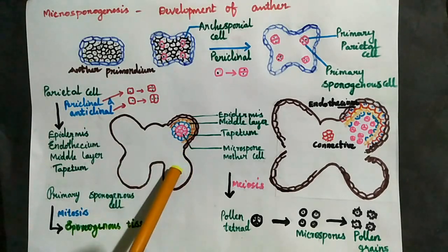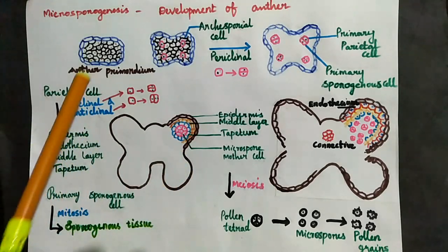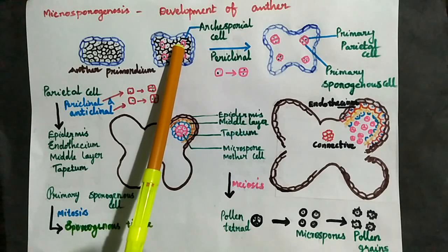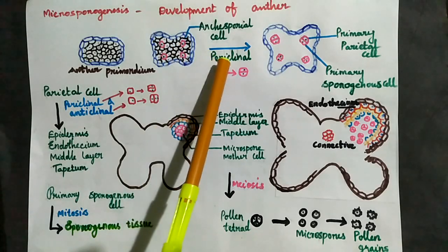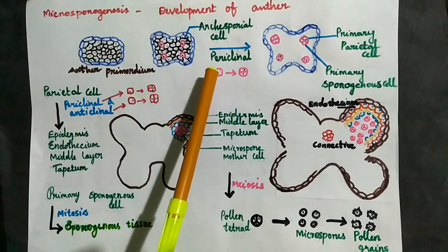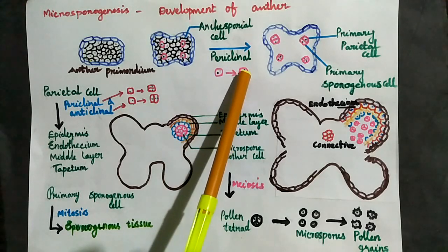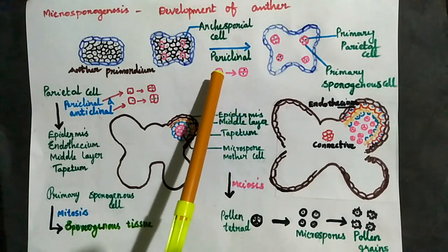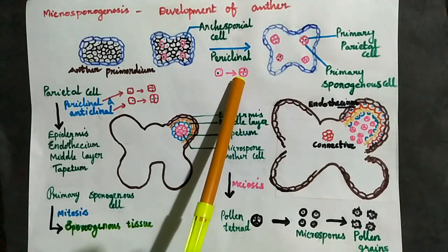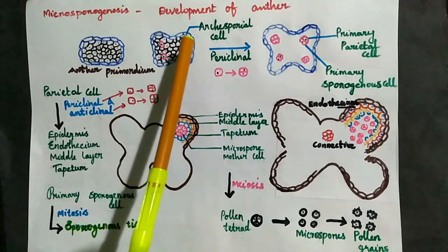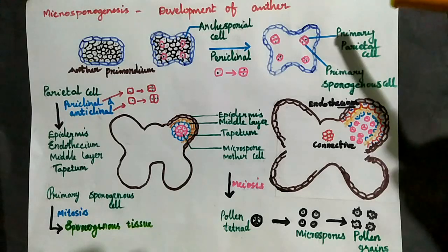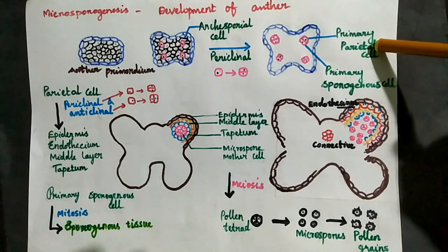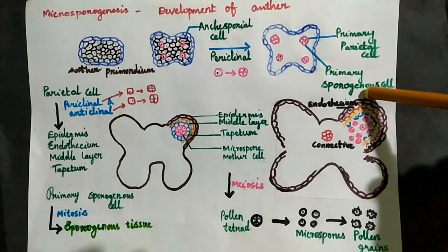First, the archesporial cells are formed. The archesporial cell periclinally divides — a periclinal division means a division parallel to the surface, or a horizontal division. Through this periclinal division, one archesporial cell divides to form the primary parietal cell and the primary sporogenous cell.